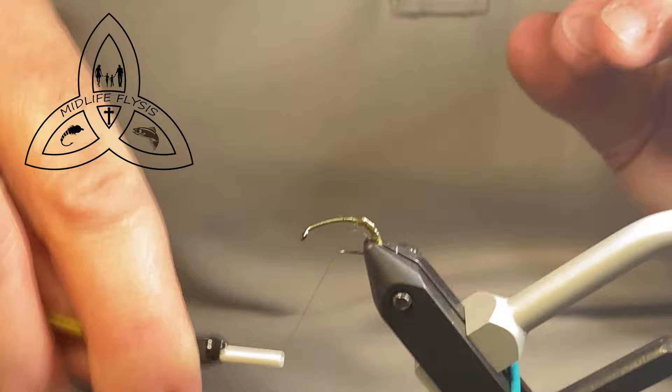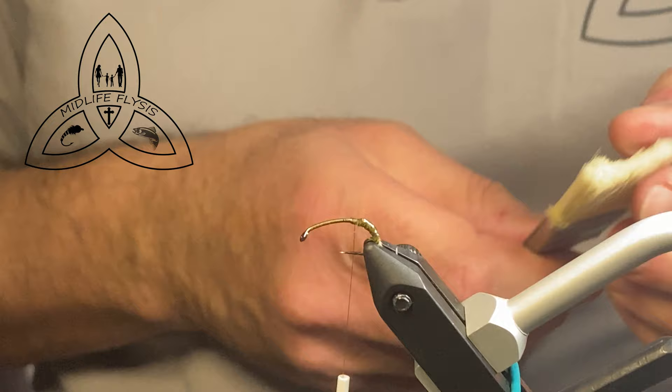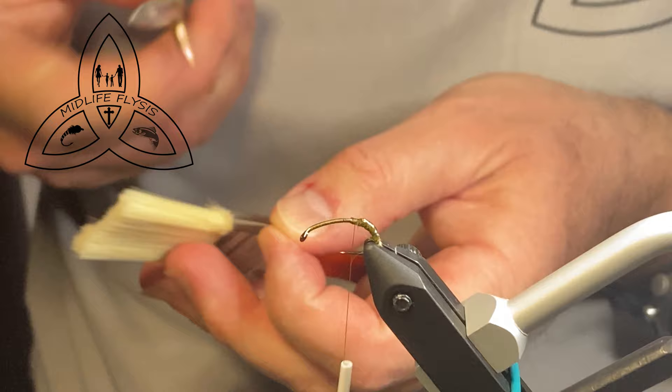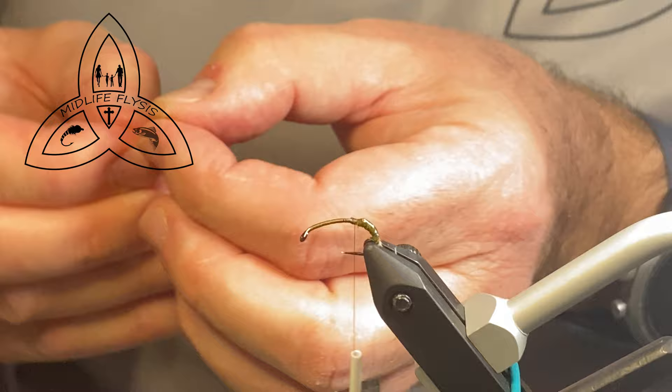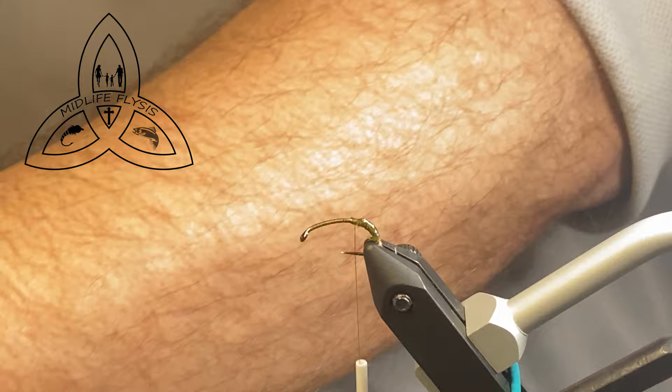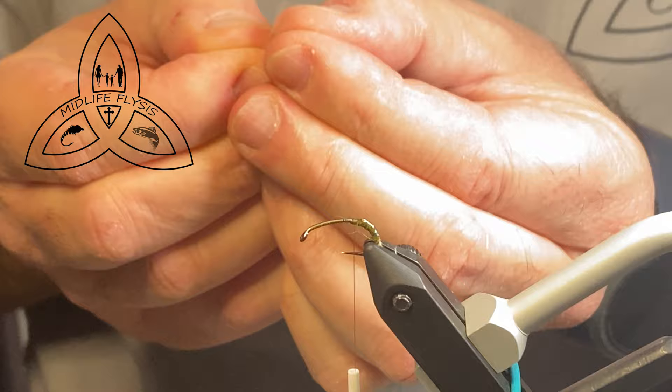So here's the difference between a size 10 and a size 12 in the Portly Emerger. The number of tail fibers. When I tie this in a size 10, I make it a three-tailed fly. When I tie it in size 12, I make it a two. So I got three of those. And I set them down where I can kind of get at them easily.